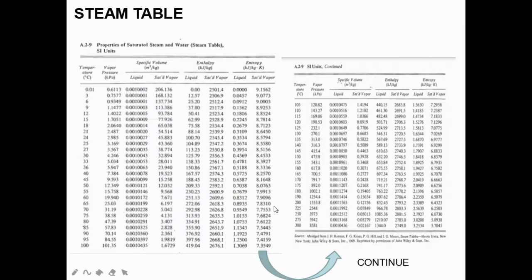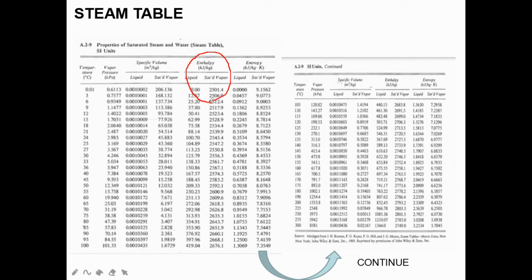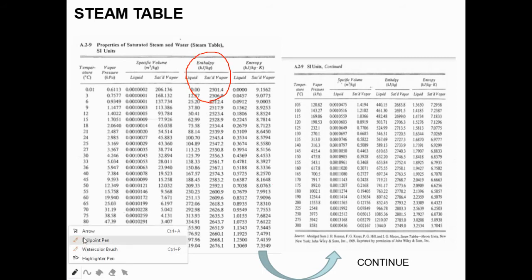The steam table is very useful. For saturated steam, if you have one data point — either temperature or pressure — you can find all other parameters like specific volume and enthalpy. We will focus mainly on enthalpy, with units of kJ/kg. The table covers temperatures from 0.01°C up to 300°C. At 100°C the pressure is approximately 101 kPa (one atmosphere), and as temperature increases, pressure and enthalpy also increase.